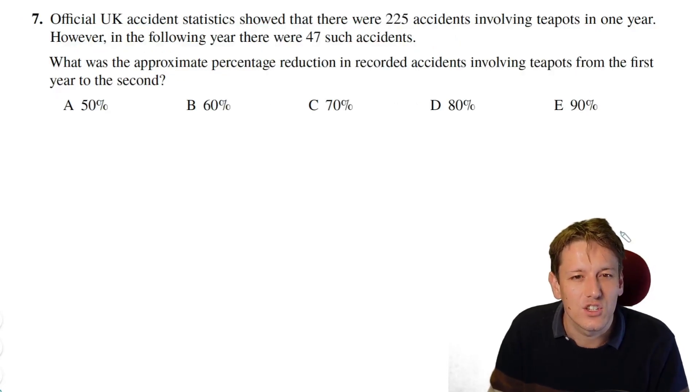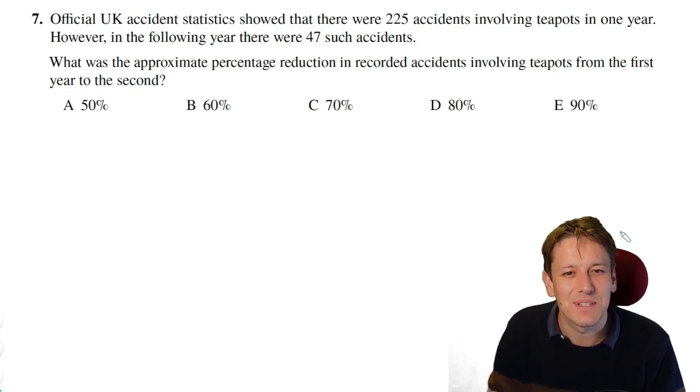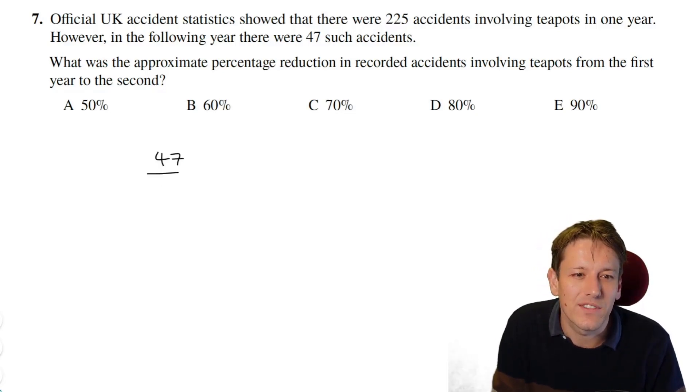Official UK accident statistics showed that there were 225 accidents involving teapots in one year. However, in the following year, there were 47 such accidents. What's the approximate percentage reduction in recorded accidents involving teapots from the first year to the second? Well, so really what we want to know here is what is 47 as a fraction of 225, as a percentage of 225?